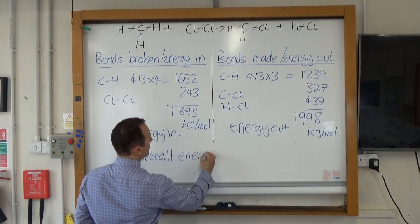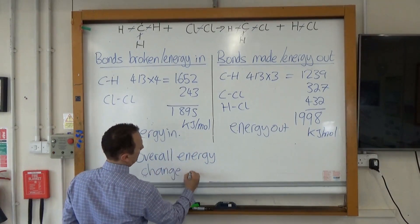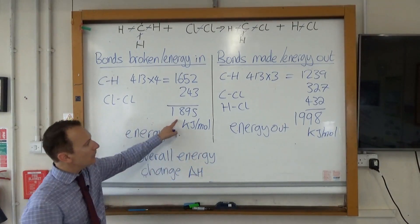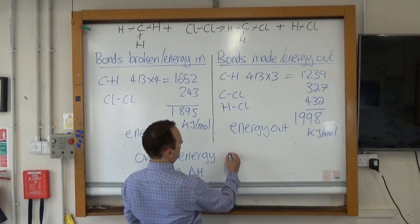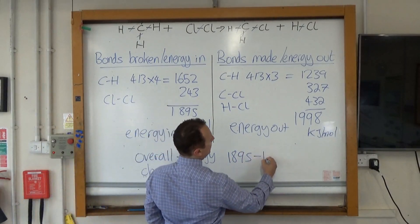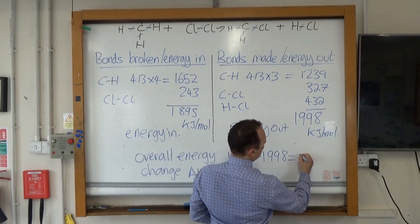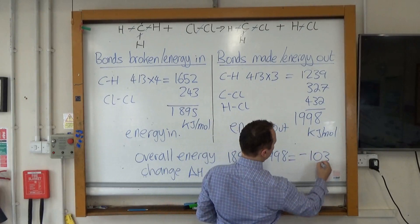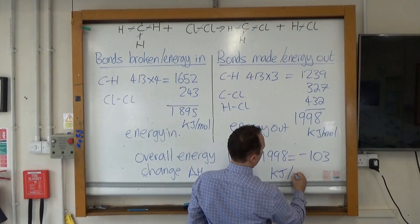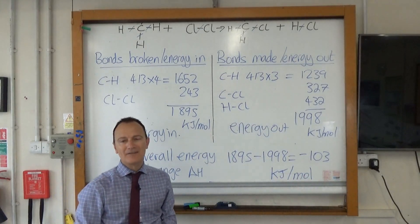Remember we can also call that value delta H, and that is simply the first number take away the second number. So that's 1,895 take away 1,998, and that is minus 103 kilojoules per mole. That would get your third mark in your exam.